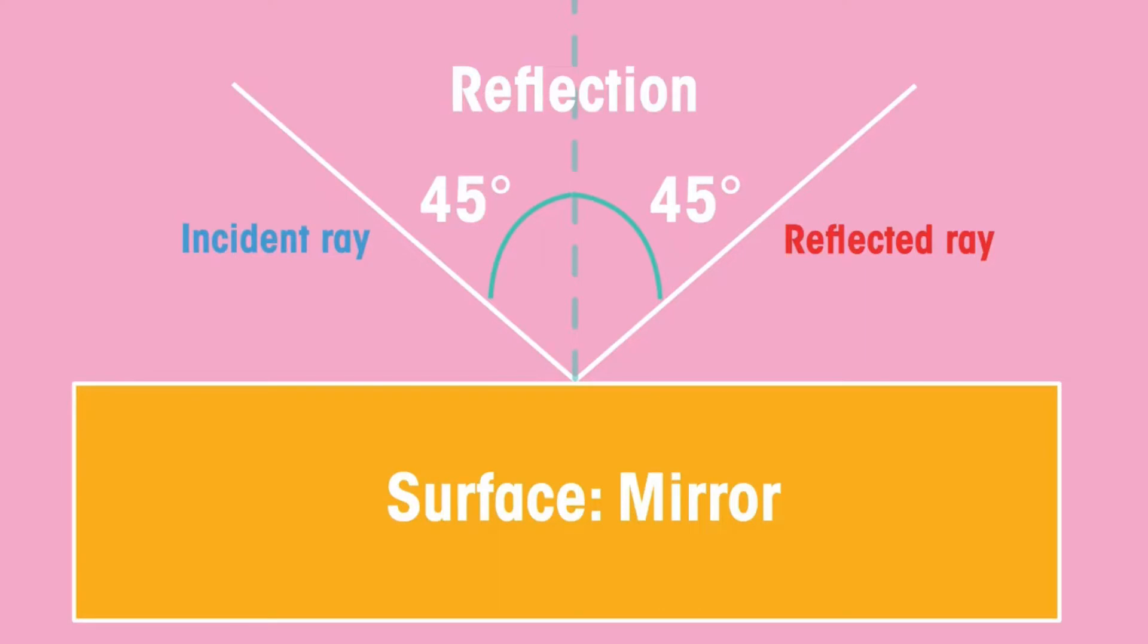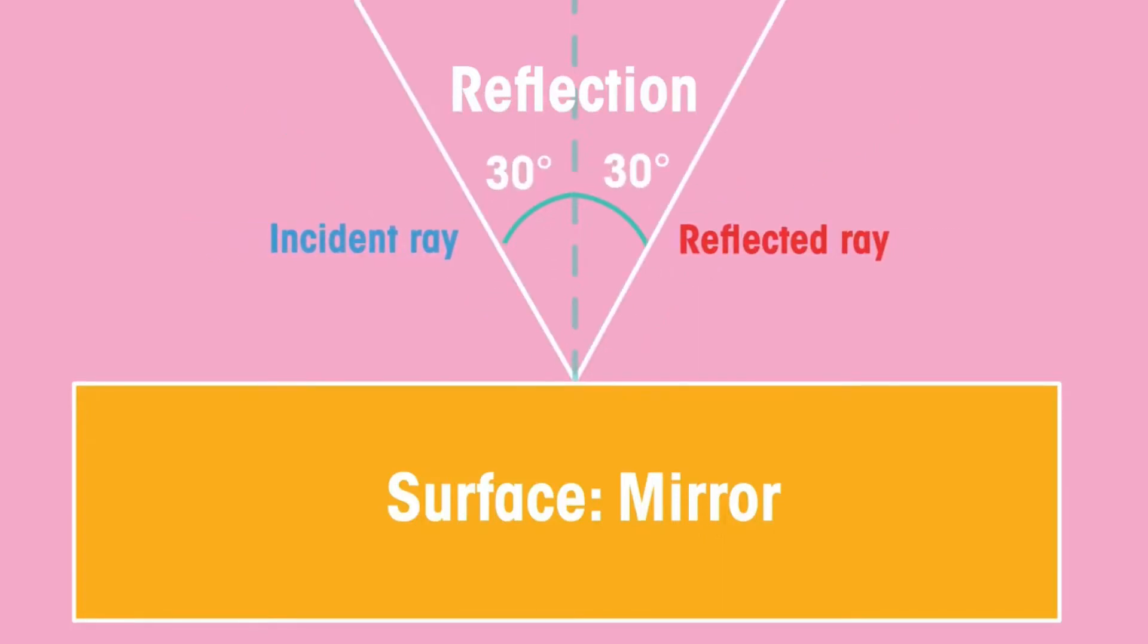So if a ray of light hits an object at 45 degrees it bounces off the object also at 45 degrees, or hits at 30 degrees then it would reflect also at 30 degrees.